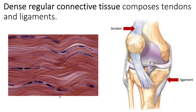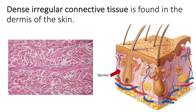Dense regular connective tissue resists tension in one plane, while dense irregular connective tissue resists tension in many directions. Dense regular connective tissue is found in tendons and ligaments, comprised of fibrocytes and fibroblasts arranged within predictable and parallel bundles of collagen. Dense irregular connective tissue, by contrast, is characterized by collagen bundles that are randomly positioned throughout the tissue — instead of a parallel and predictable pattern, these collagen fibers are going every which way.